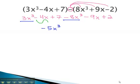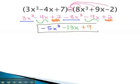Next, we have the negative 4x, which is like the negative 9x. Negative 4 and negative 9 is negative 13x. Finally, 7 plus 2 gives us a positive 9. And this becomes our solution as we subtract the two polynomials.